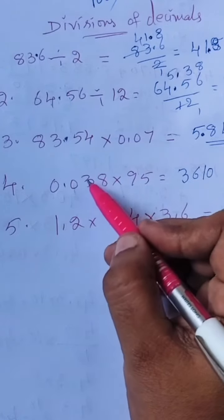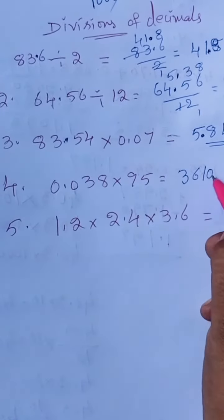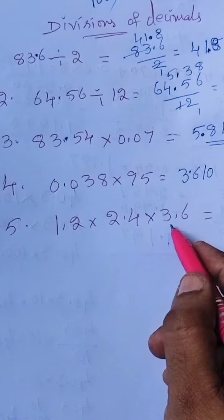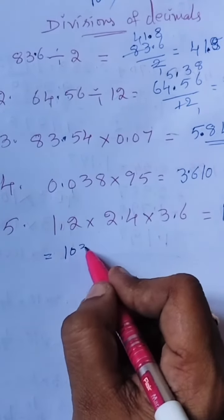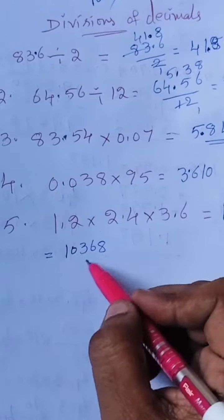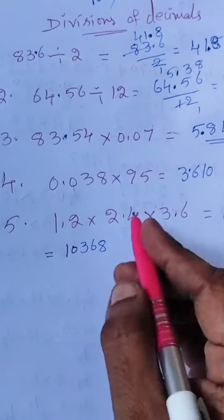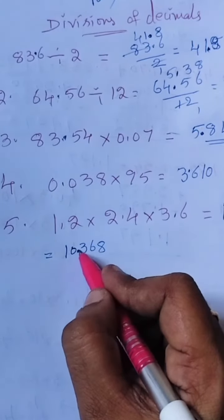Next one: 1.2 into 2.4 into 3.6. So the answer is 10.368. Where we keep the point? Here this is 1, 2, 3, so 3 digits before we keep the point: 1, 2, 3. So answer equals 10.368.